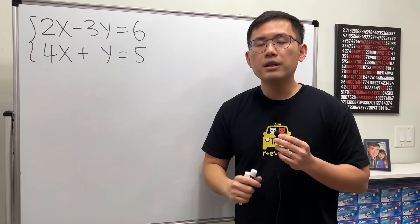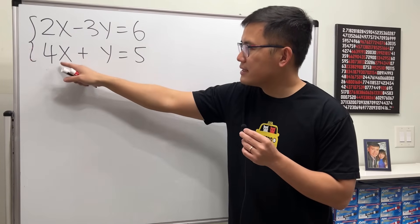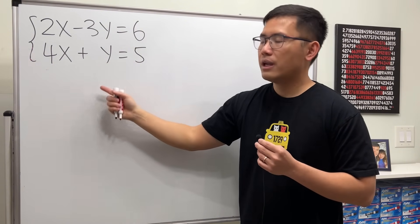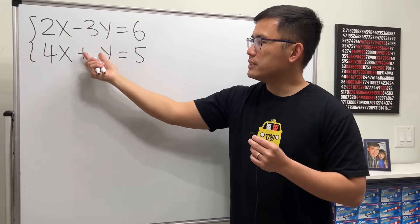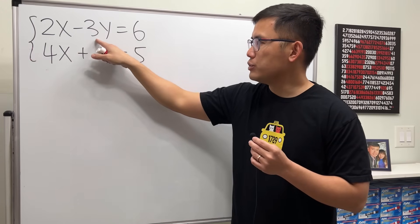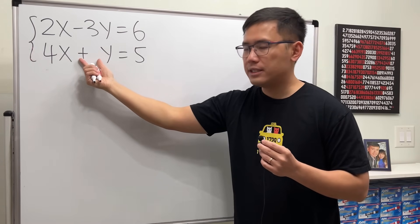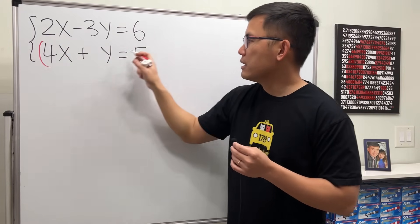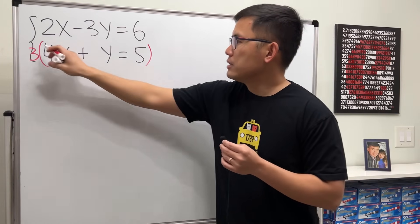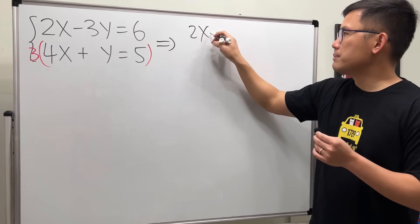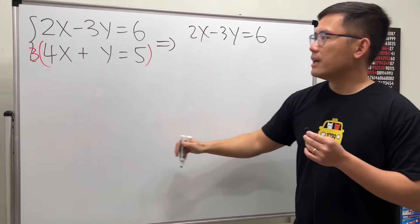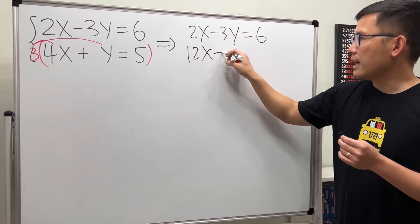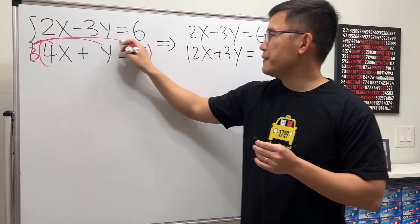The third way is called elimination. What you want to do is pick either x or y to be eliminated. Let's say we want to eliminate y, because we see this is just plus y. We need to make sure the coefficients have the same number but opposite sign. This is negative 3, so we want a positive 3 here, because negative 3 plus 3 is 0. So let's multiply the second equation by positive 3. I will keep the first equation: 2x minus 3y equals 6. Then 3 times 4 is 12x, 3 times y is plus 3y, and 3 times 5 is 15.